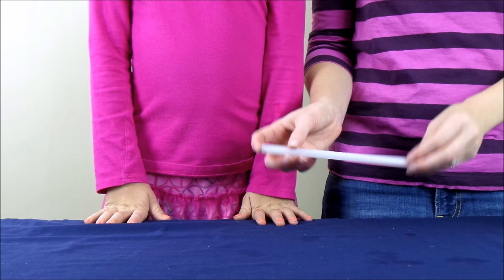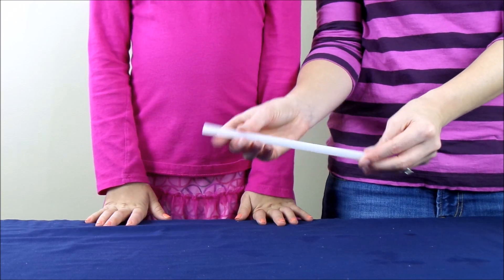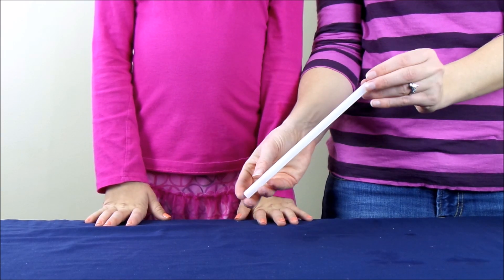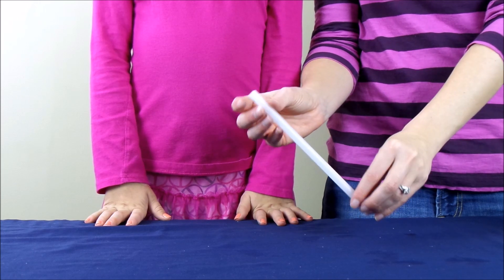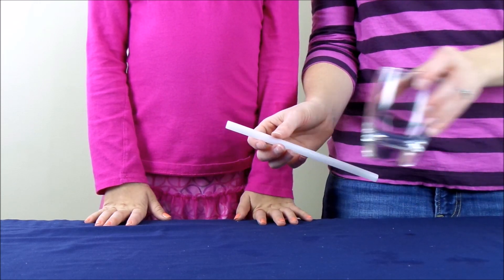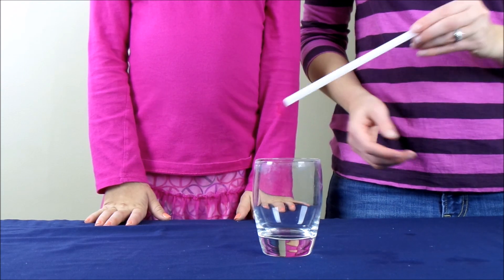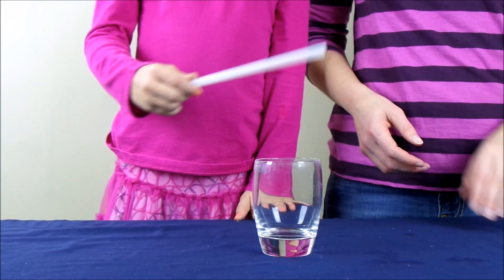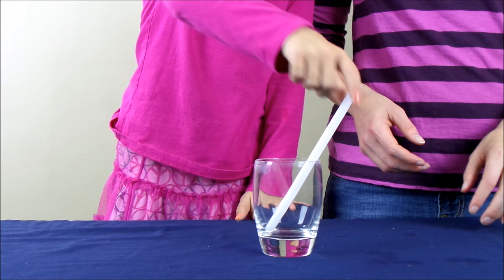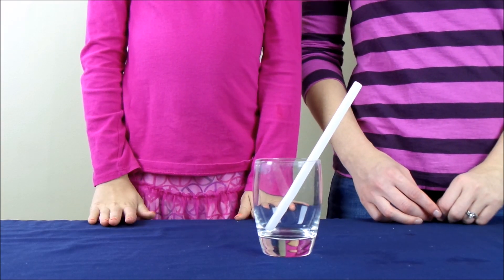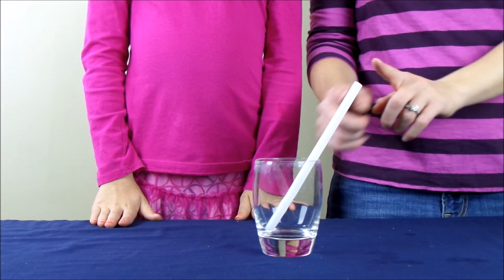So for this experiment you're going to need a plastic straw and my straw is one that's from a water bottle that's why it's so big. And what we're going to do is we're going to take an empty glass and we're going to put the straw inside the glass. And as expected the straw is straight.